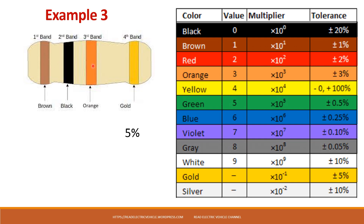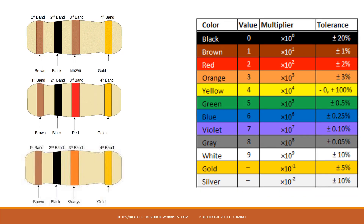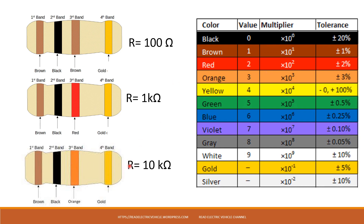Let us take the next example. Here you have brown, black, and the third multiplier band is orange. Brown-black gives 10, and orange means 10 power 3, which is 1000. So the value is 10 multiplied by 1000, which is 10 kilo ohms. In all three examples, the first two bands are brown-black giving 10 — this is a very common resistor. Whenever you see brown-black, write 10, then identify the multiplier: brown means multiply by 10, red means multiply by 100, and orange means multiply by 1000.